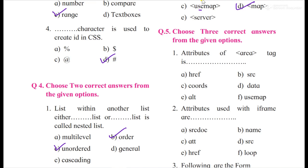Then choose three correct answers from the given options. Attributes of area tag is yes, href to give the linking, and coordinates to specify the coordinates whether it would be a circle or rectangle or a poly, then the alt. Yes, href, coords, and alt, fine.